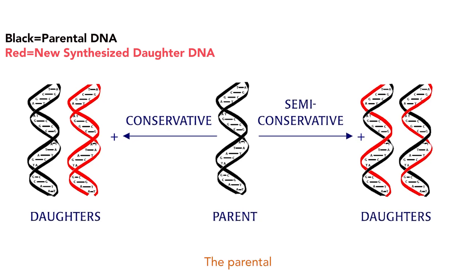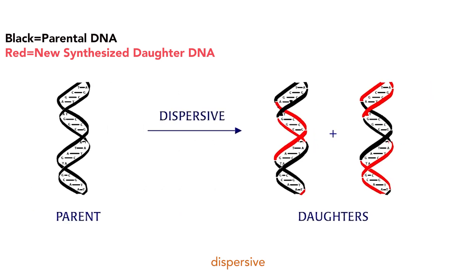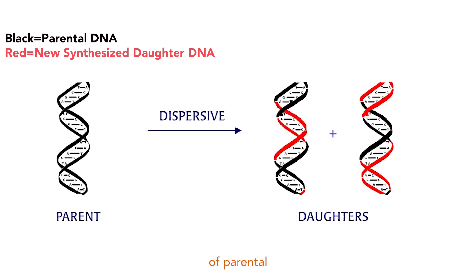The parental strands are kept together and the two newly synthesized DNA strands are kept together. In the dispersive replication model, the strands of the daughter DNA molecule contain pieces of parental and newly synthesized DNA.